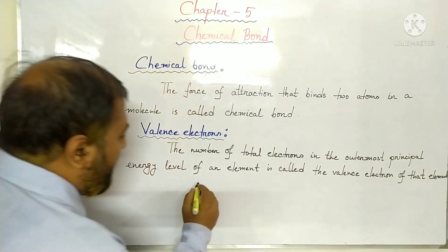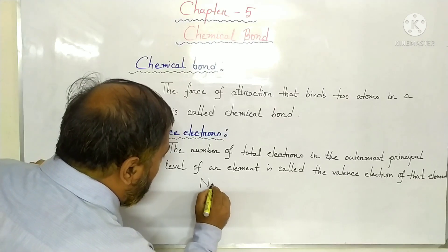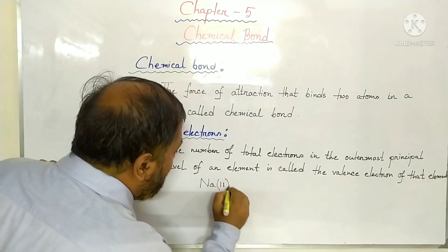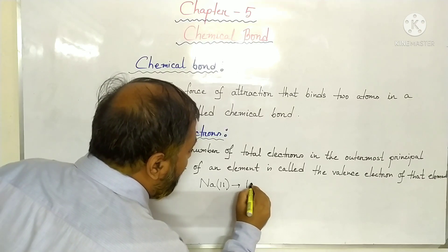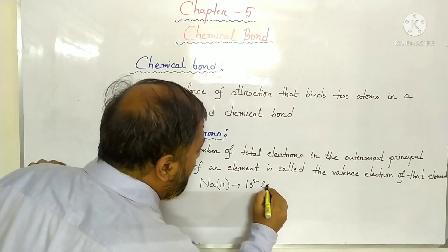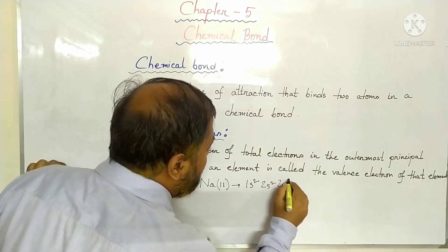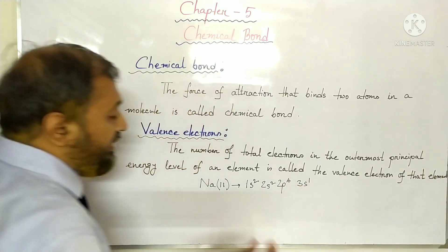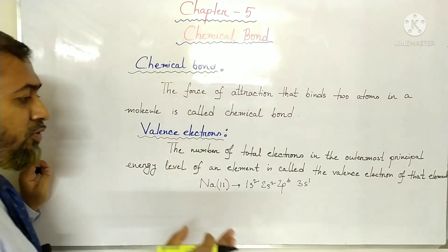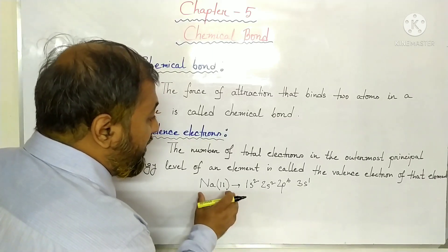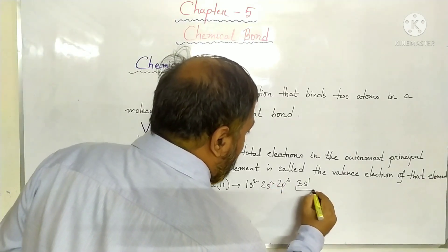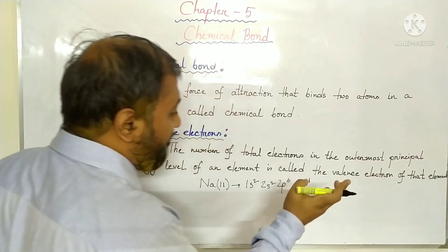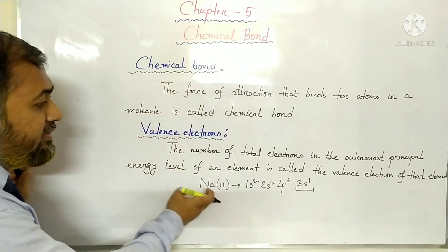I am going to give you an example of valence electron. You can see the board — this is sodium. The total number of electrons present in sodium is 11, and the electronic configuration of sodium is 1s², 2s², 2p⁶, and 3s¹. Here you can see the outermost principal energy level of sodium is 3, and there is one electron in this level. So the valence electron of sodium is 1.